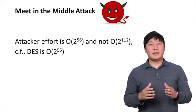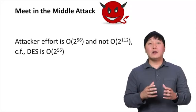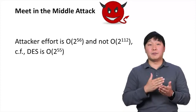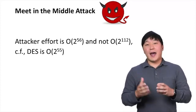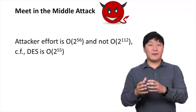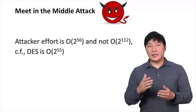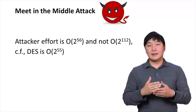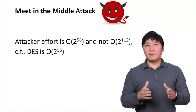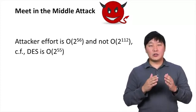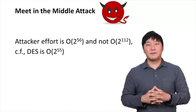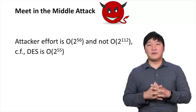More specifically, the attacker needs to compute all 2^56 computations for the first DES cipher from p, and then on average half of 2^56 — that is, 2^55 — decryption computations for the second DES cipher from c. On average, the total computational effort is 2^56 + 2^55, which is O(2^56).